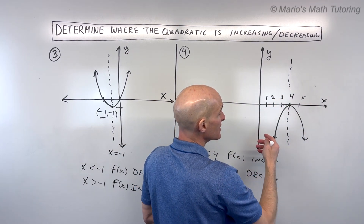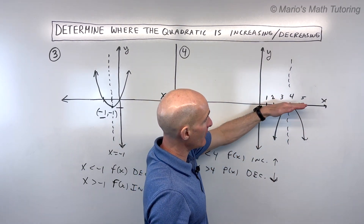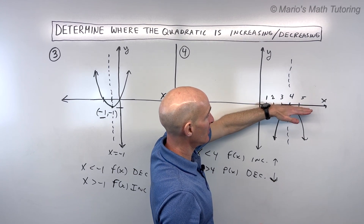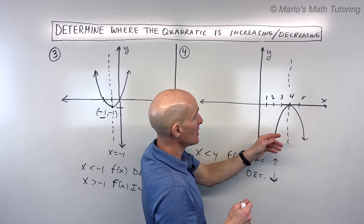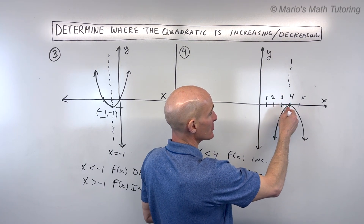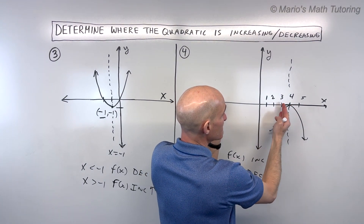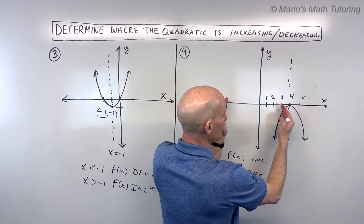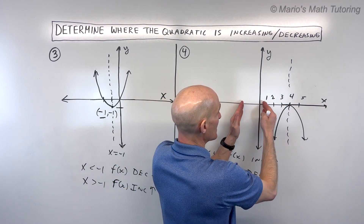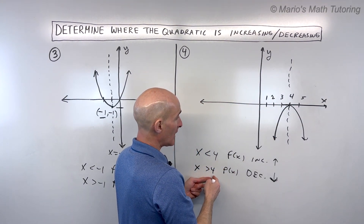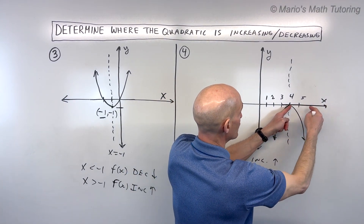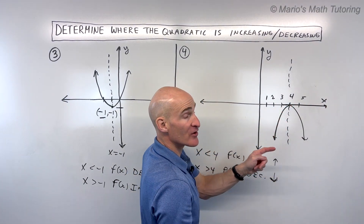When you're thinking about where does it increase or decrease, don't think about the y-values or the height. Don't say it increases up to zero — that's talking about the y-values. We're saying, for what x-values are the y-values increasing or decreasing? When x is less than 4, the y-values are increasing as I move from left to right. When x is greater than 4, as I move from left to right, all the y-values are decreasing.